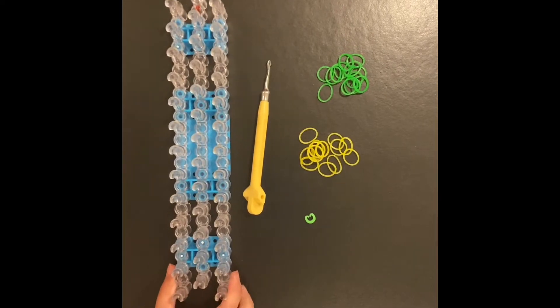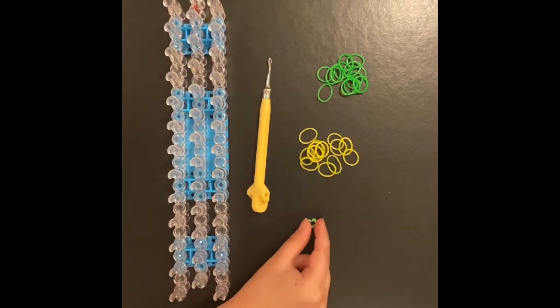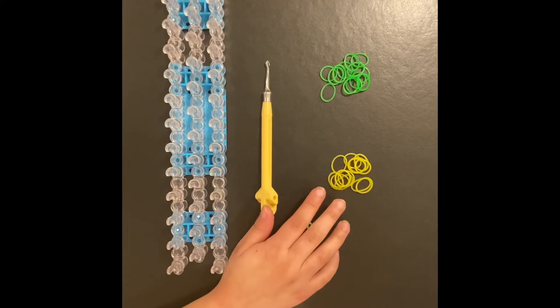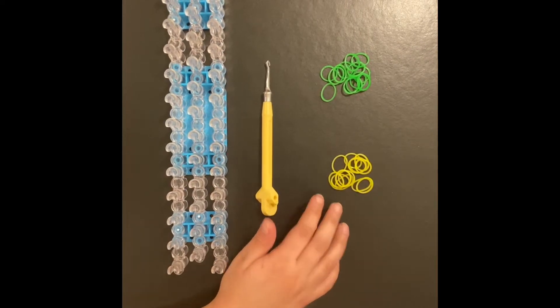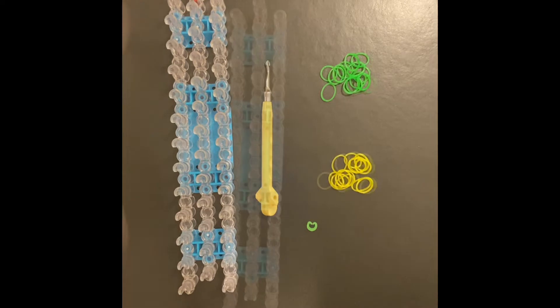You will need a loom, a hook, a clasp, 13 of one colored rubber band, and 13 of the other. Let's start.